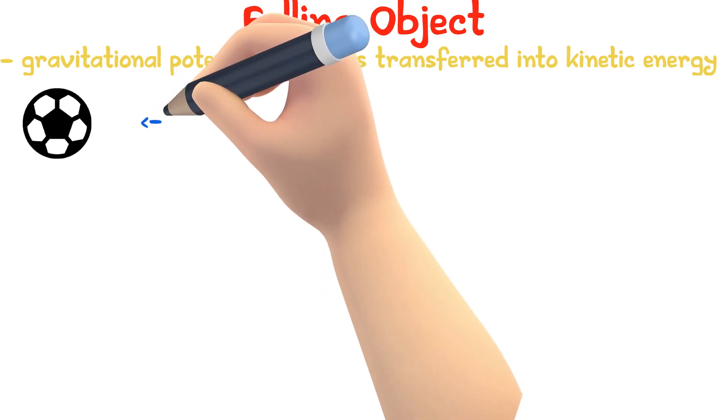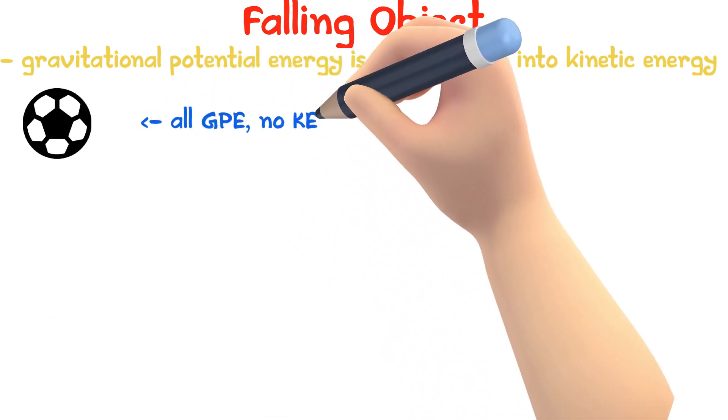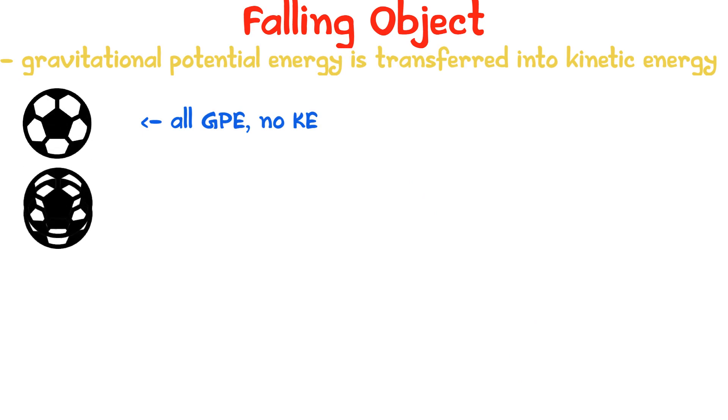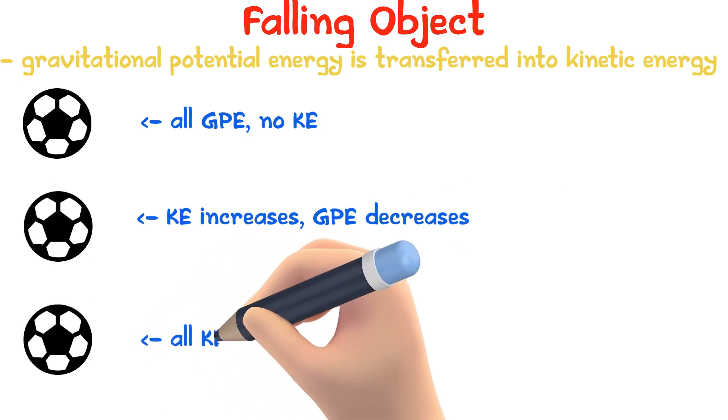At the top, it is all GPE and no kinetic energy, but when it is dropped, the kinetic energy increases as the gravitational potential energy decreases. Right before the object hits the ground, all GPE has been transferred into kinetic energy.